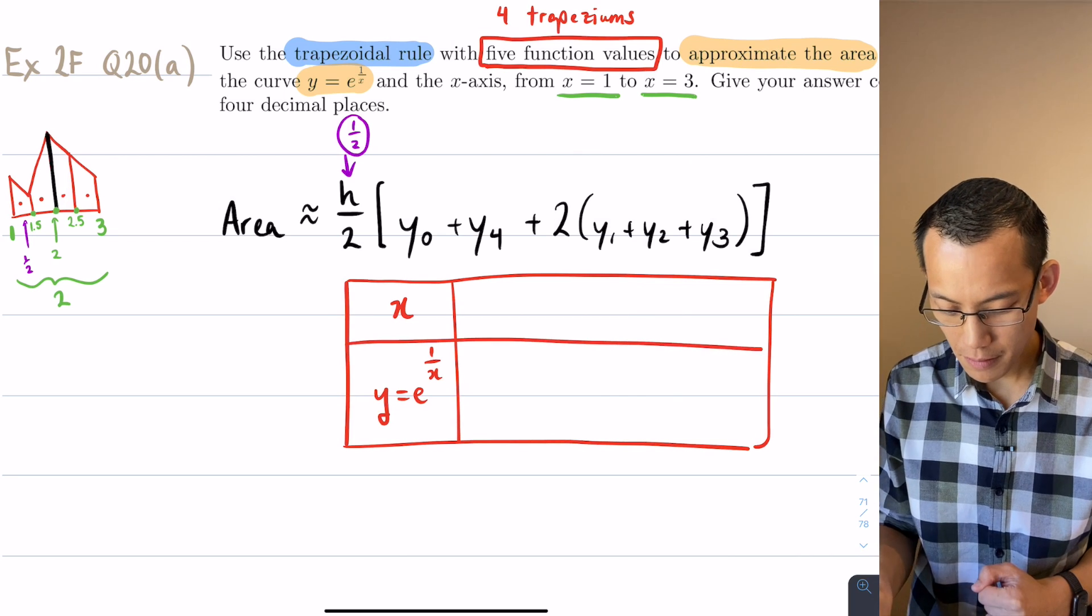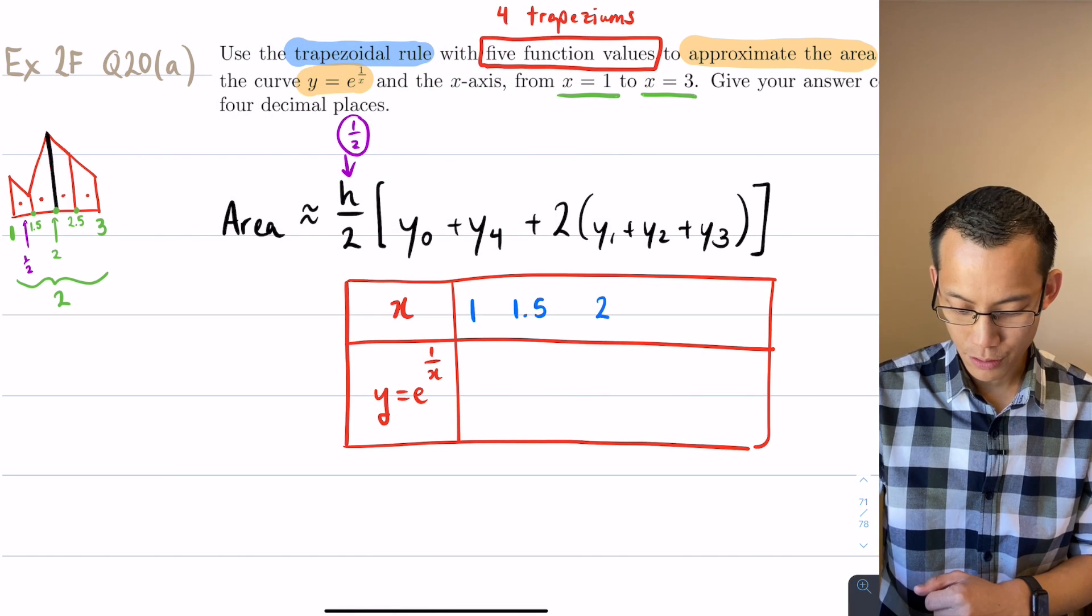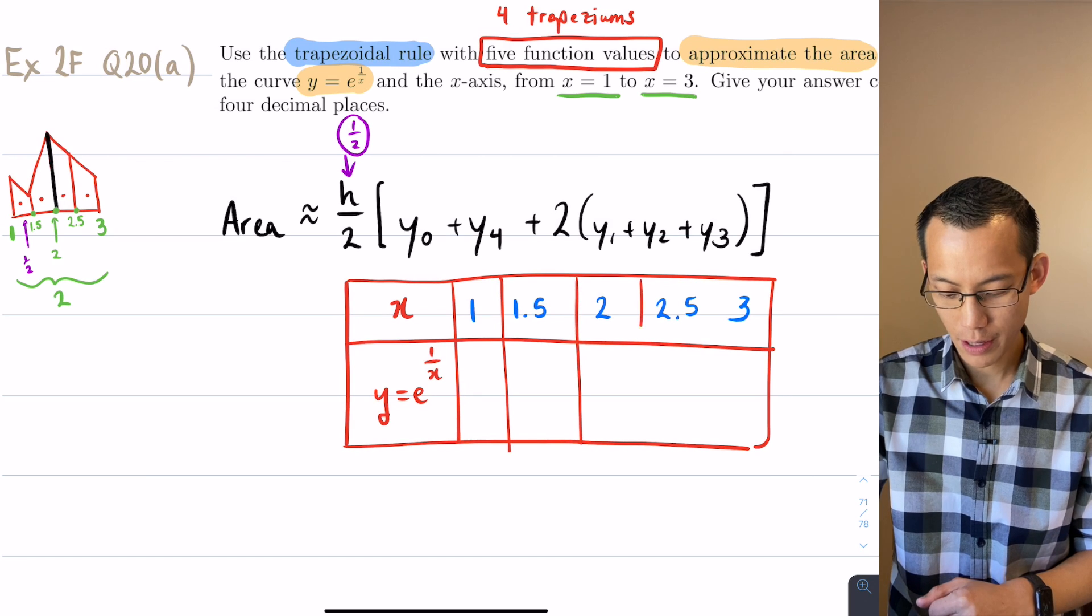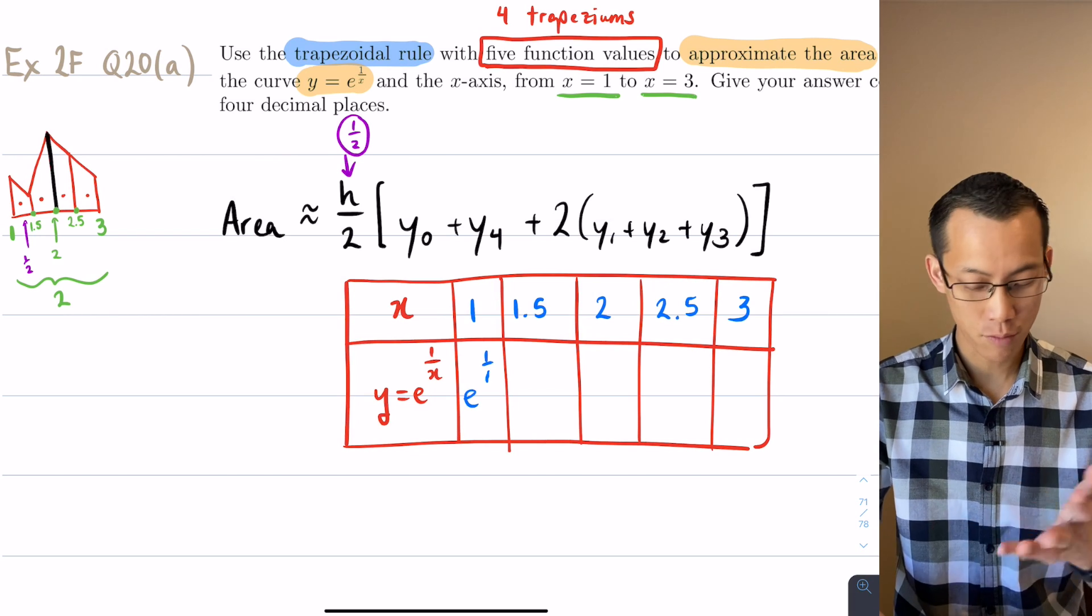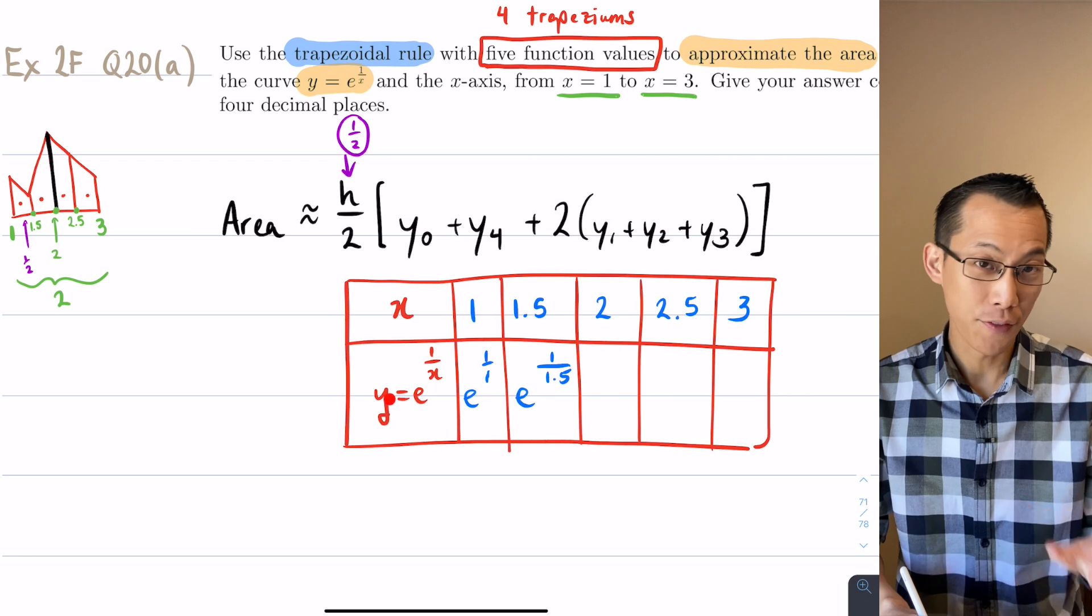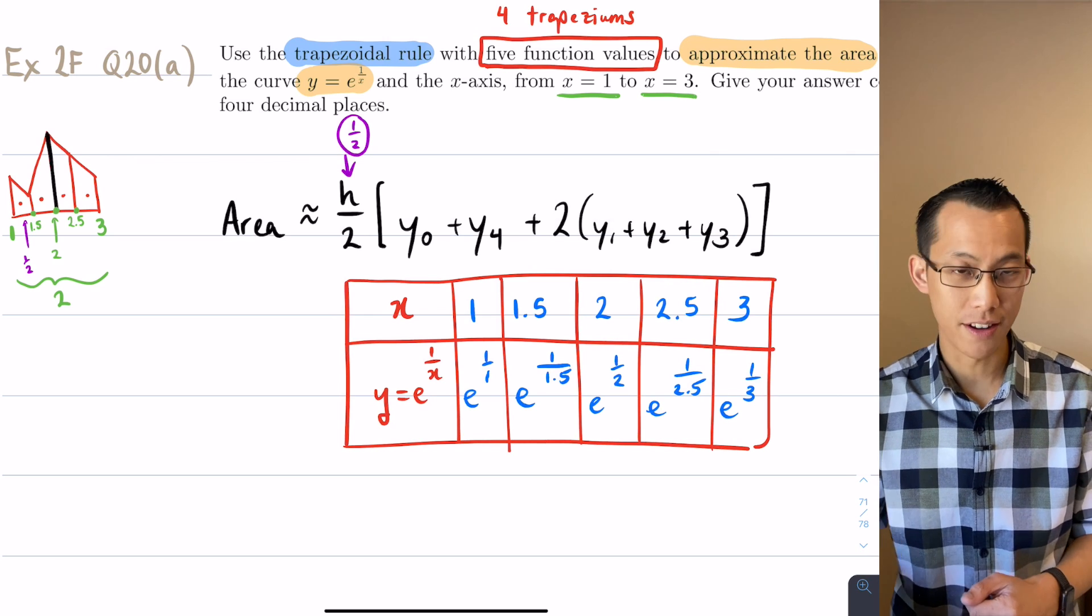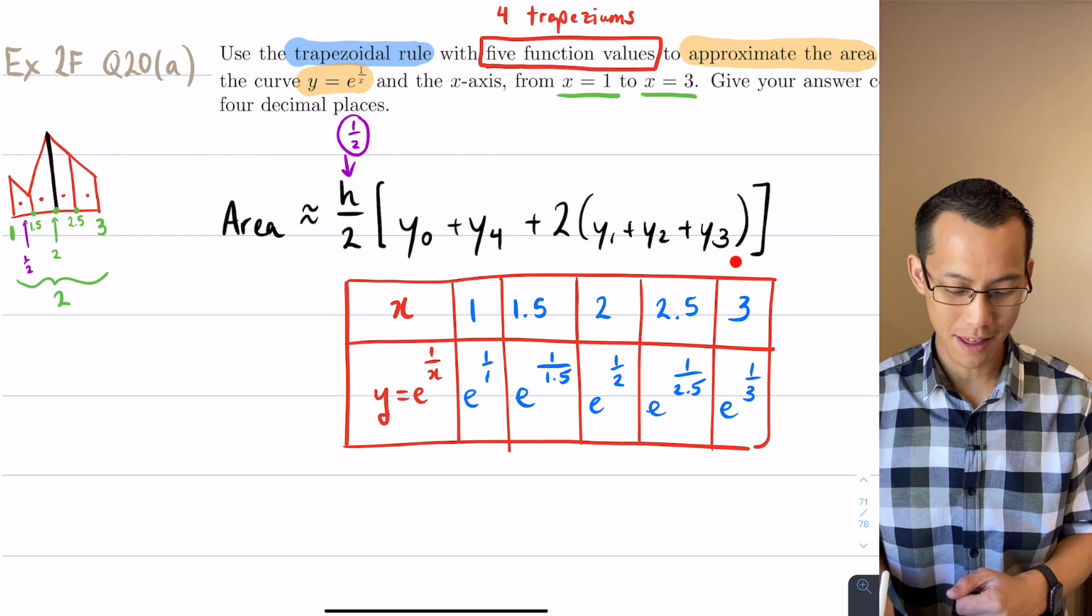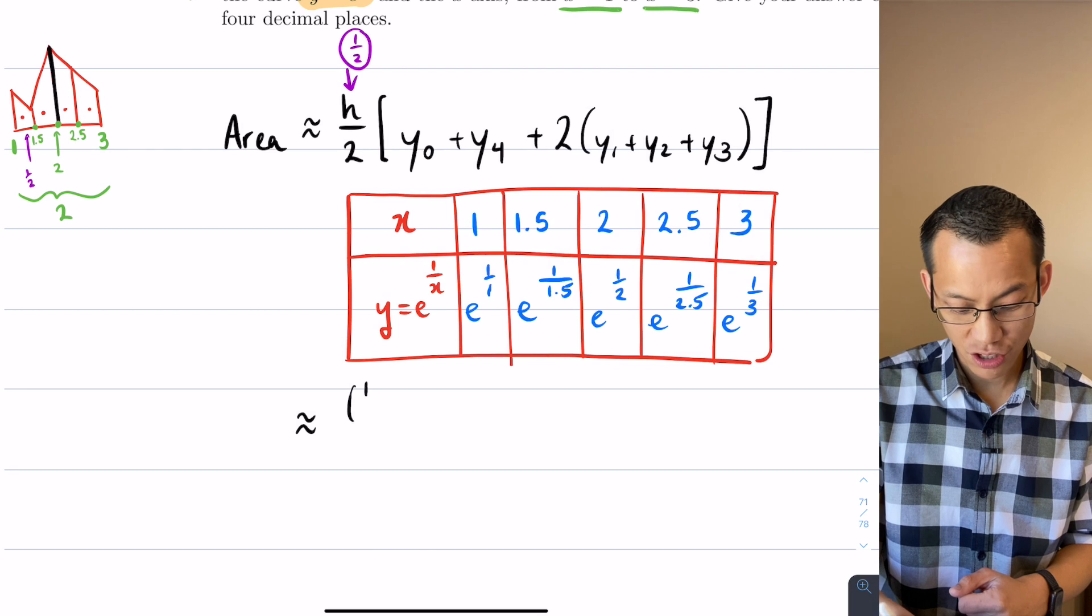So let me make a bit of a table here. My x values are 1, 1.5, 2, 2.5 and 3. And now I'm going to calculate what the y values are that correspond to those. Just be careful when you're doing your substitution here, and obviously you're going to need your calculator. This will be e to the power of 1 over 1, so that'll be e to the power of 1. This will be e to the power of 1 on 1.5. I'll have e to the power of a half, e to the power of 1 over 2.5, and then e to the power of a third.